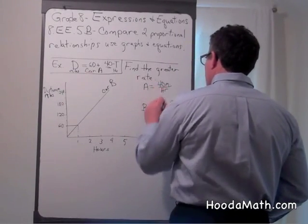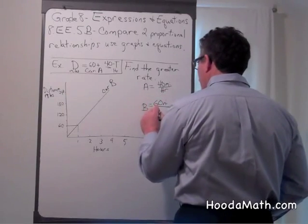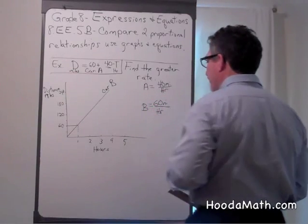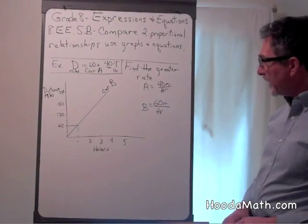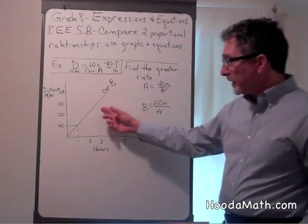60 miles per hour. So the greater rate was car B, 60 miles per hour.